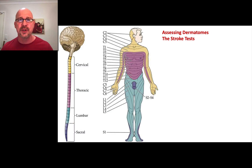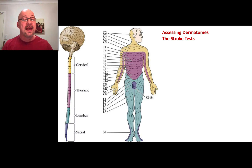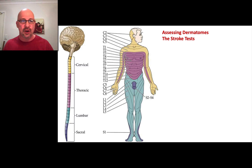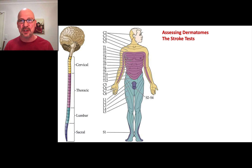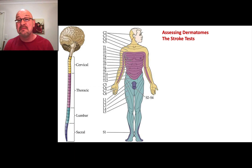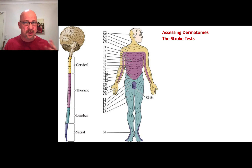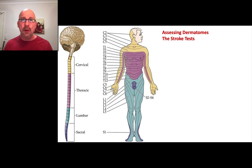These are the different dermatomes we want to test — cervical, thoracic, lumbar, then sacral, in order. This is actually really easy to do. Like the cranial nerves, you just have to memorize the pattern, and you can always refer back to the specific dermatome locations. You don't have to be too specific. In emergency medicine, if you say they have weakness or paresthesia or absence of sensation from around T3 to T7, that's good enough. The ER docs will care about that, and then the neurologist will come in and do something more specific. We're just looking in a gross sense for any deficits.